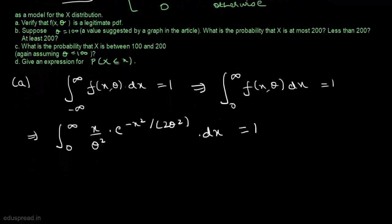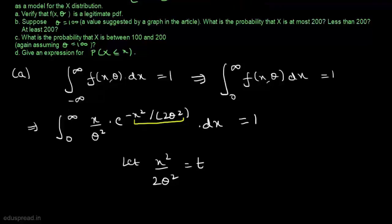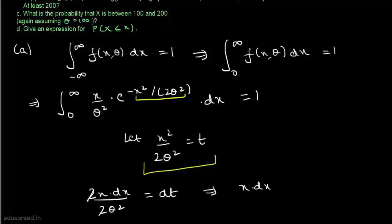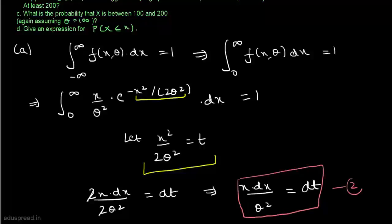This looks quite tedious, so let's simplify the probability density function. Let x² divided by 2θ² equal t. Differentiating, we get 2x dx divided by 2θ² equals dt. Cancelling, this implies x dx divided by θ² equals dt — call this equation 2, and the substitution equation 1.